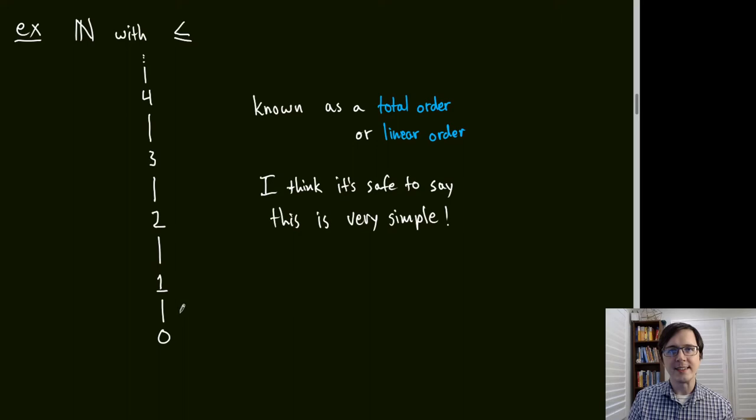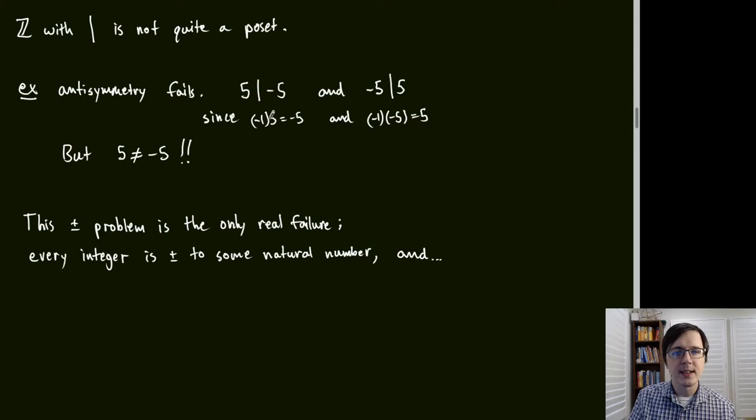Our next goal is to understand divisibility better. One complication: the integers with divisibility don't quite form a POSET because anti-symmetry fails. For example, 5 divides −5 (since −1 × 5 = −5) and −5 divides 5, but 5 ≠ −5. However, this plus-minus issue is the only real failure.